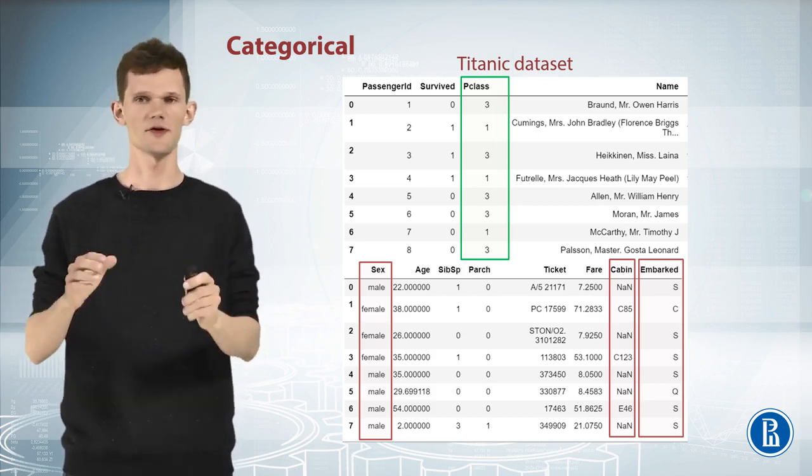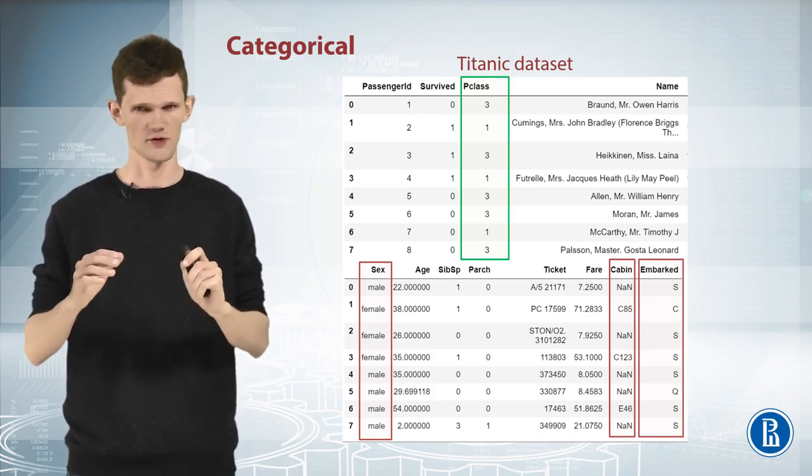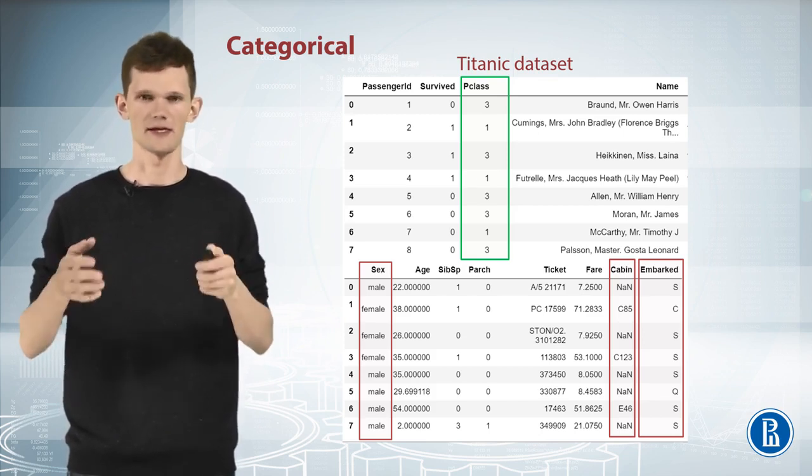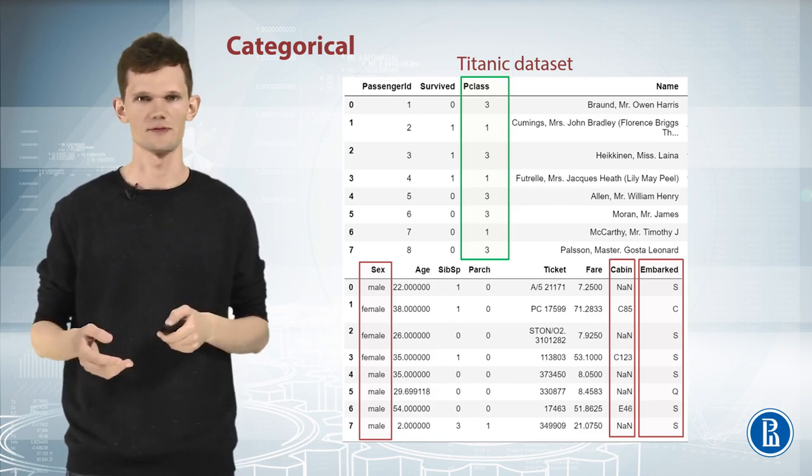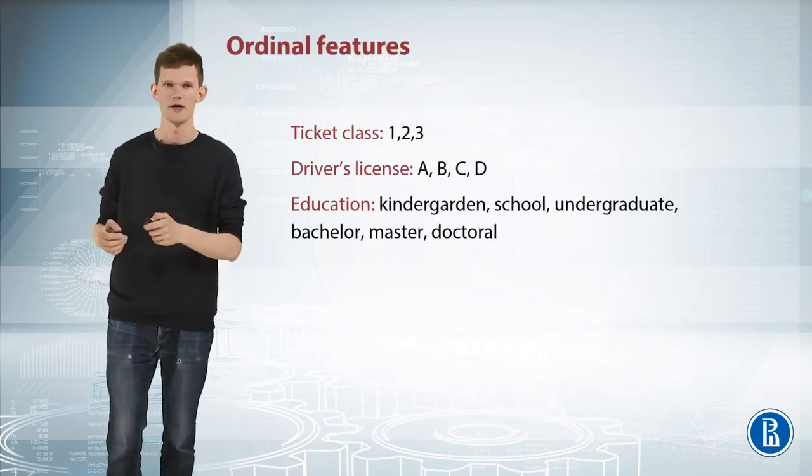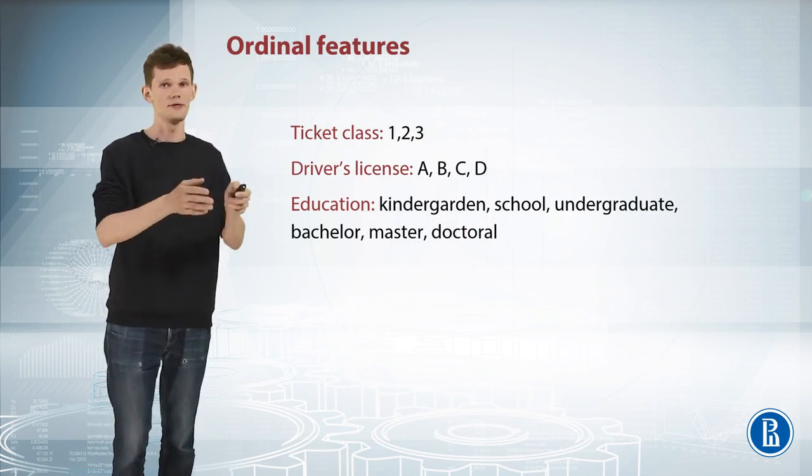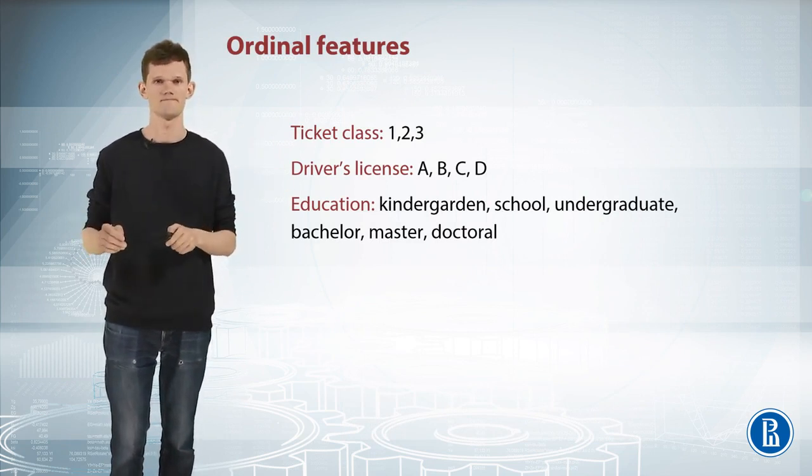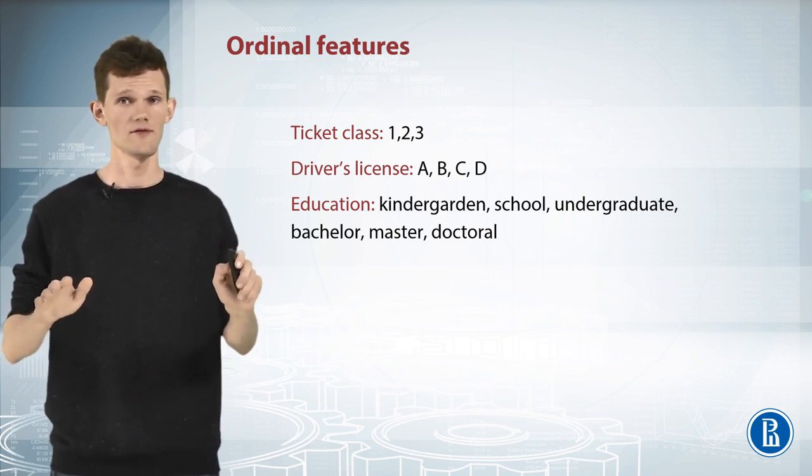As with numeric features, we can't sort unique values of ordinal feature the other way and expect to get similar performance. Another example of ordinal feature is a driver's license type. It's either A, B, C, or D. Or, another example, level of education.